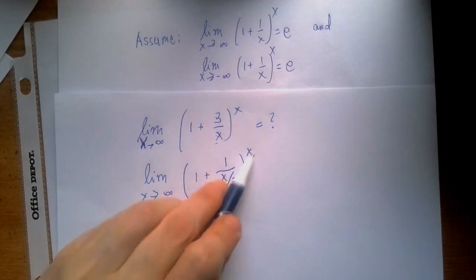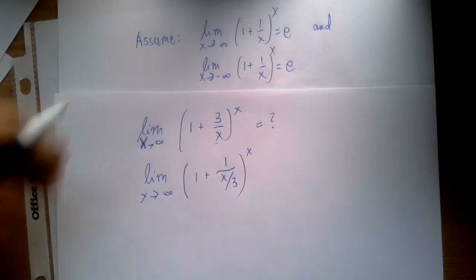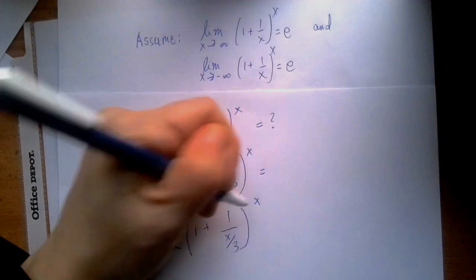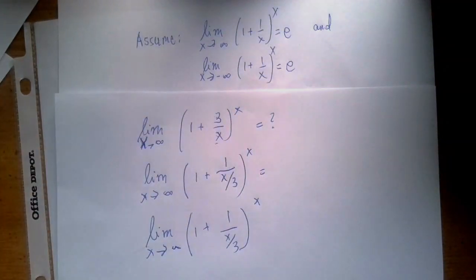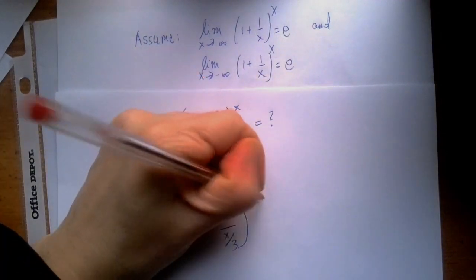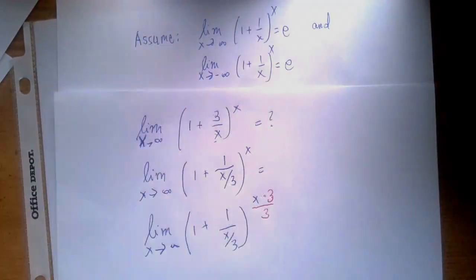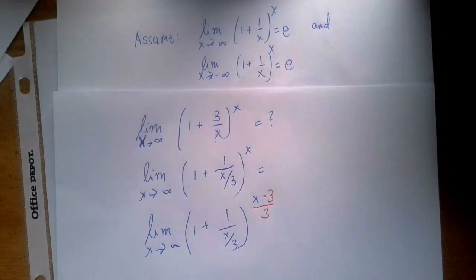But now we don't have this matching. So we need to work on that. And usually in calculus, by now you are used to it. If we want something to be there, we just smuggle it in by adding and subtracting or multiplying and dividing by the same amount.